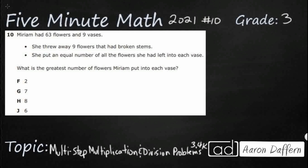So Miriam has 63 flowers and 9 vases, but she first throws away 9 flowers because they had broken stems. So let's take care of that first. We're going to end up putting an equal number of all the flowers that are left into each vase, but we need to get rid of these 9 flowers.